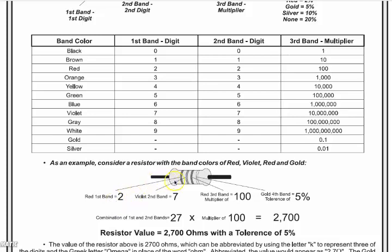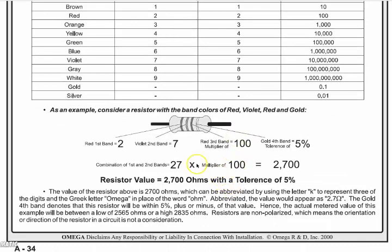For instance, this one here has a red band, a purple band, and a red band, and then you have a tolerance band. So you have 2 plus 7, multiplier of 100, equals 2.7k ohm resistor. So that's basically the math and how this is all worked out.